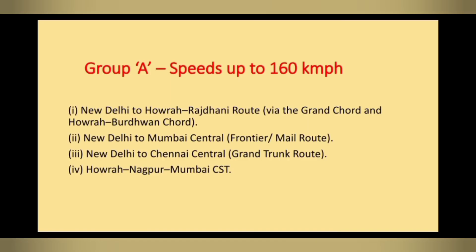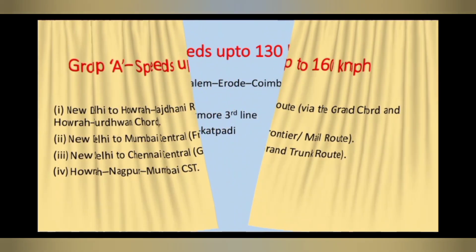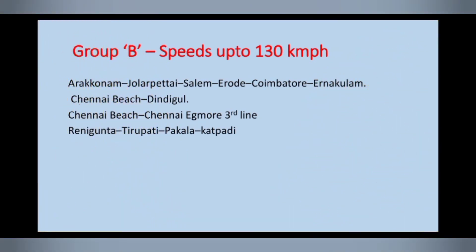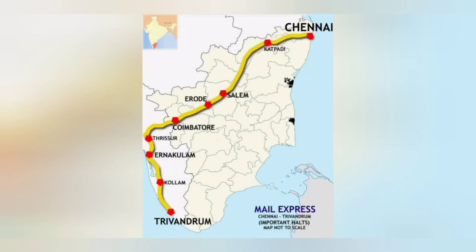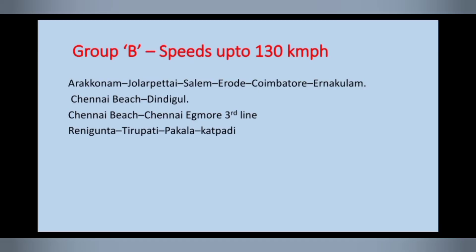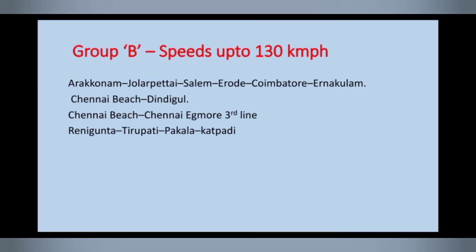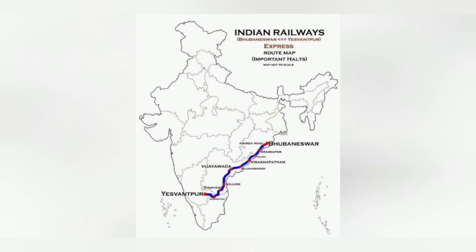New Delhi to Chennai Central Grand Trunk route is also a Group A route. Coimbatore to Thrissur is a Group B route, and Ernakulam to Trivandrum is a Group D route. Chennai Beach to Dindukal is a Group B route. Chennai Beach to Chennai Egmore third line is also a Group B route. Renikunta–Tirupati route is also a Group B route.